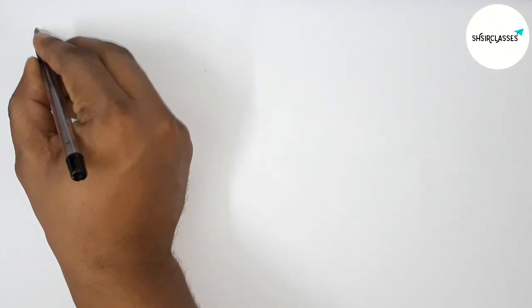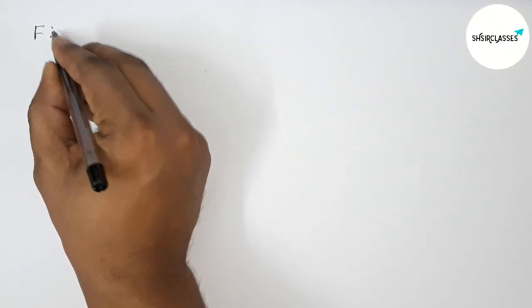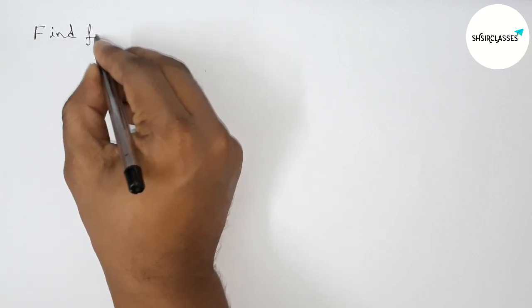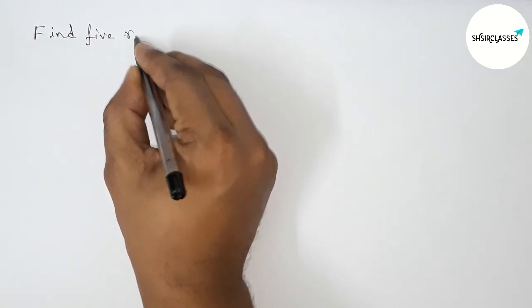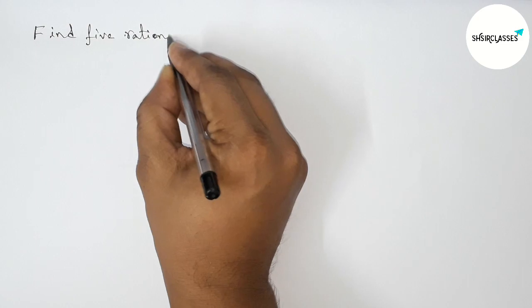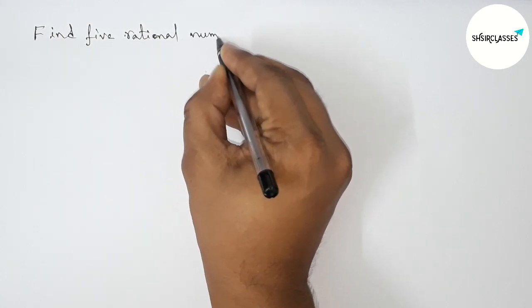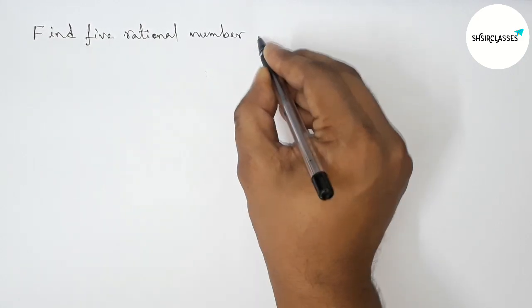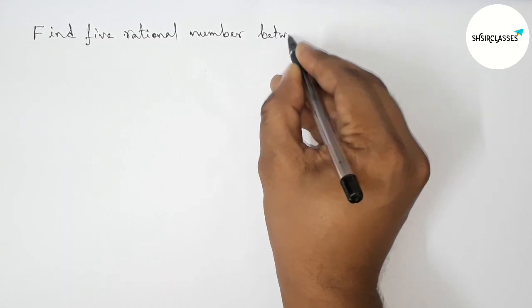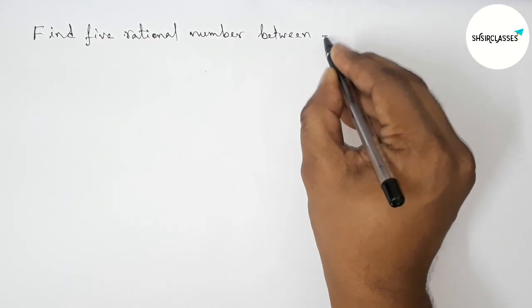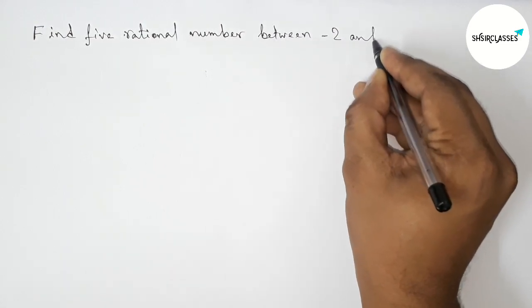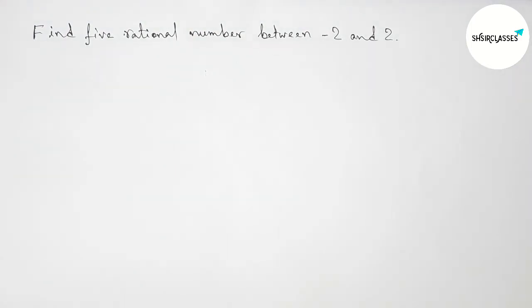Hi everyone, welcome to SI Share Classes. Today in this video we have to find five rational numbers between minus 2 and 2 in an easy way. So please watch the video till the end. Let's start the video.